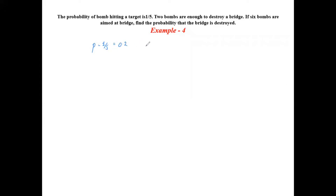The total number of bombs aimed is n equal to six. We have to solve using binomial distribution where p plus q is equal to one. So q equals 1 minus p, which gives us q equal to 4 by 5, that is equal to 0.8.